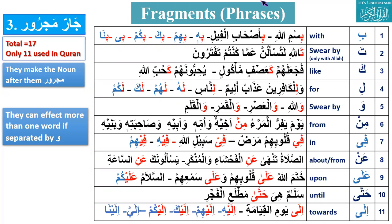Question for brother Ijaz: is there any mistake in 'Lil Muslimuna'? Yes — Muslimuna is Marfu status. Because of Li, which is Huruf-e-Jar, we should say Muslimina. Li is Haruf-e-Jar; Haruf-e-Jar makes the noun that comes after it Majroor. Muslimun's Majroor form is Muslimin, so it should be Lil Muslimina.